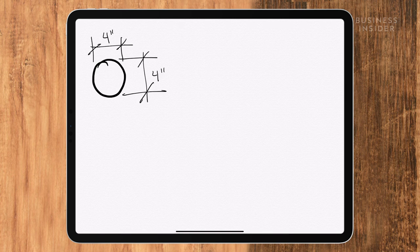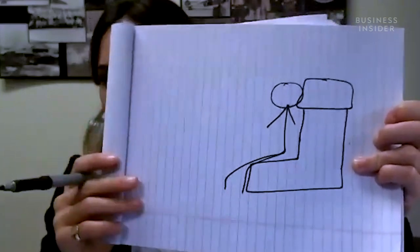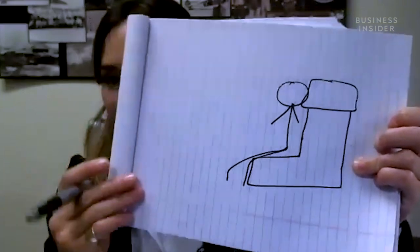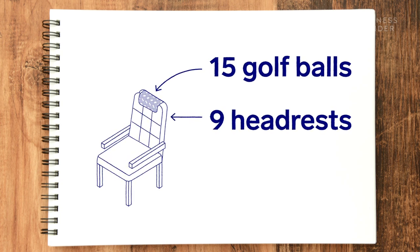I'm gonna predict that a golf ball is four inches by four inches in diameter. A headrest is probably — here's my head, so let's say it's that big and maybe that thick. Now I'm just trying to break down the seat to figure out how many golf balls fit in it. In this headrest, I'd say about 15.